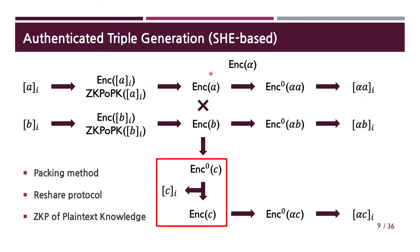We can do similarly for alpha*B. To generate shares of C and alpha*C, we first homomorphically multiply the ciphertexts. To generate shares of alpha*C, we can again homomorphically multiply the encryption of alpha and perform distributed decryption. However, this method is not favorable since it requires an SHE scheme of multiplicative depth two, as we are homomorphically multiplying two times consecutively. This increases the parameters of SHE and affects efficiency.